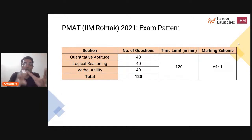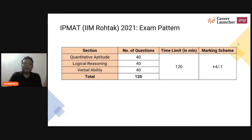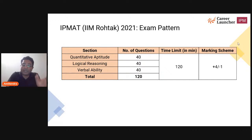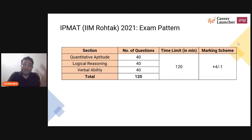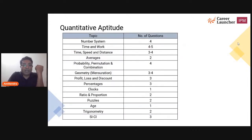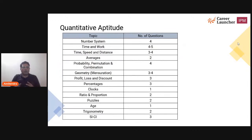The marking scheme was: 40 questions across each of the sections, total time limit of 120 minutes, plus 4 marks for every correct answer, and minus 1 mark penalized if your attempt is incorrect. Now let's look at each of these sections.